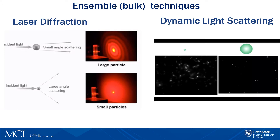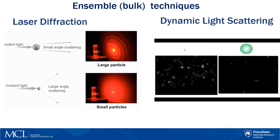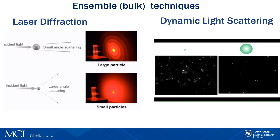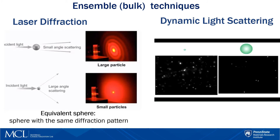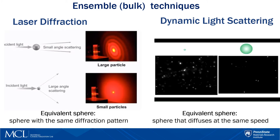Laser diffraction and dynamic light scattering are both ensemble techniques where we measure a combined or bulk signal from all particles. Laser diffraction is based on the measurement of diffracted angles — small particles diffract at large angles and large particles diffract at low angles. In dynamic light scattering we measure the diffusion coefficient, where small particles diffuse faster and large particles diffuse slower. To simplify the measurement process we use the concept of equivalent spheres, where particle size is defined by the diameter of an equivalent sphere which has the same property as the actual particle. For laser diffraction, diameter is defined as the diameter of a sphere that creates the same diffraction pattern as the particle of interest. For dynamic light scattering, it is the diameter of a sphere that diffuses at the same speed as the particle being measured.